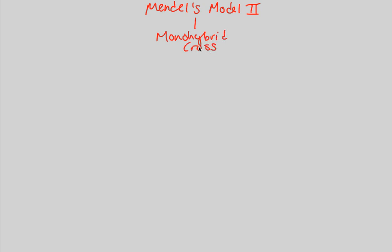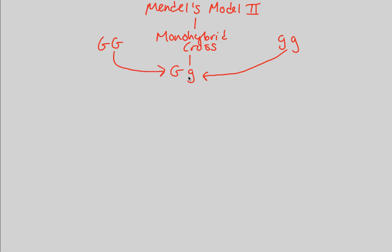We established the formation of a heterozygote — the capital G, lowercase g combination — through two parents that each donated one gamete to give us this heterozygous monohybrid. Everything before this was the precursor to the actual cross, which is what we really want to focus on when we talk about a monohybrid cross.